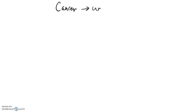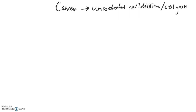Let's talk today about what cancer means. Cancer just means uncontrolled cell division — or we could even say uncontrolled cell growth. We understand now that mitosis is cell division, where one cell becomes two, and that's a necessary process for repair and for growth. But cancer occurs when the normal constraints of cell division are not working.